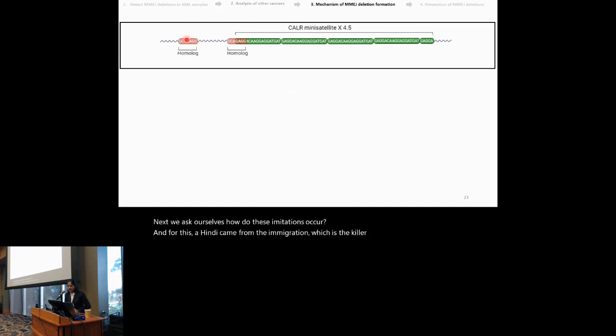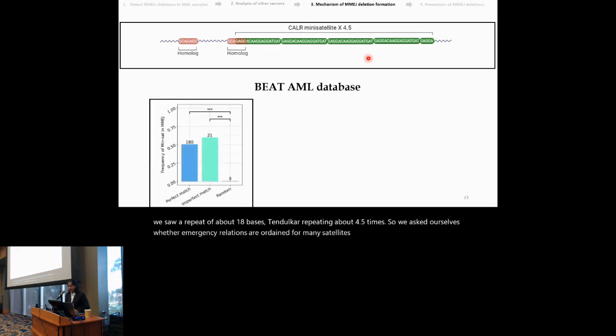Next, we asked ourselves, how do these MMG deletions occur? And for this, a hint came from the known MMG deletion, which is the CALR. Now, just next to the CALR homology, we saw a repeat of about 18 bases, tandemly repeating about 4.5 times. So we asked ourselves whether MMG deletions are enriched for mini-satellites. What we found out was both the perfect match and the imperfect match deletions were enriched for mini-satellites as compared to random deletions.